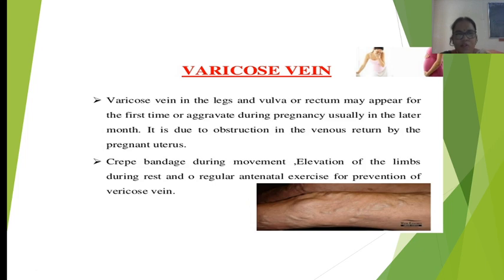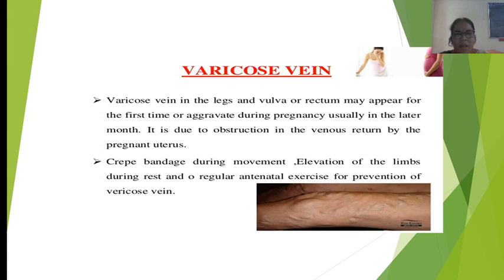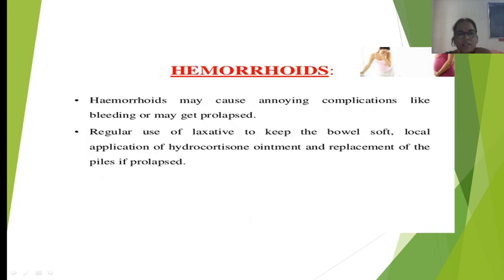Next are varicose veins, which may appear in the legs, vulva, or rectum for the first time or aggravate during pregnancy, usually in later months. This is due to obstruction of venous return by the growing uterus. Sometimes varicose veins in the rectal area appear in the form of hemorrhoids. Measures to reduce varicose veins include wearing a crepe bandage during movement, elevation of the limbs during rest, and regular antenatal exercises.